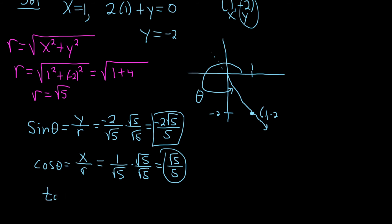The tangent of theta is a little bit easier. In this case, it's just y over x. So it would just be negative 2 over 1, so just negative 2. Pretty easy there.